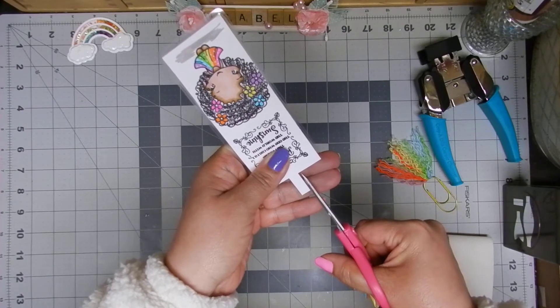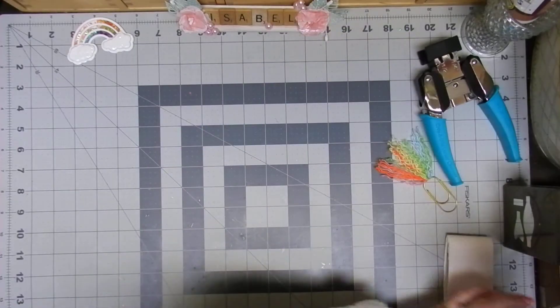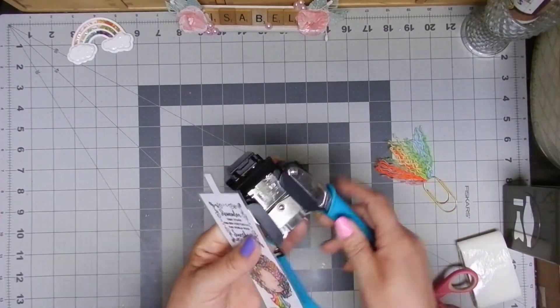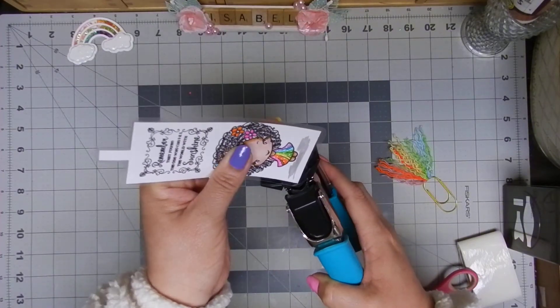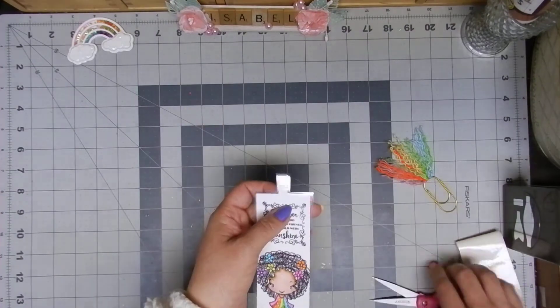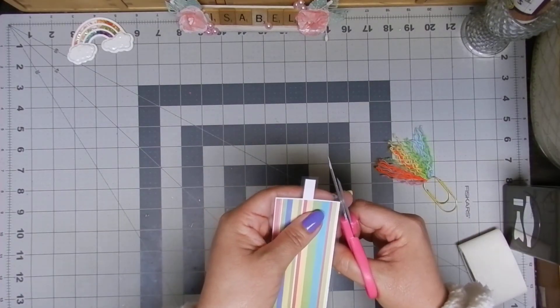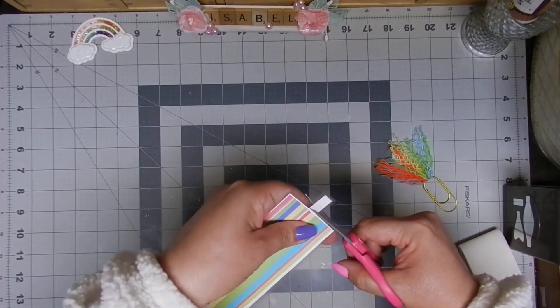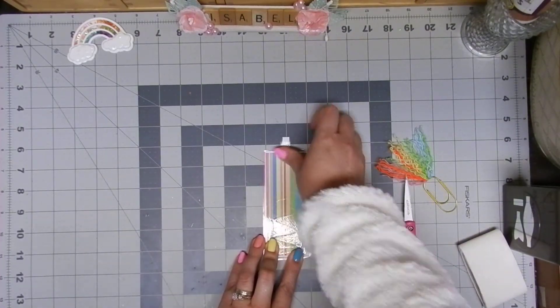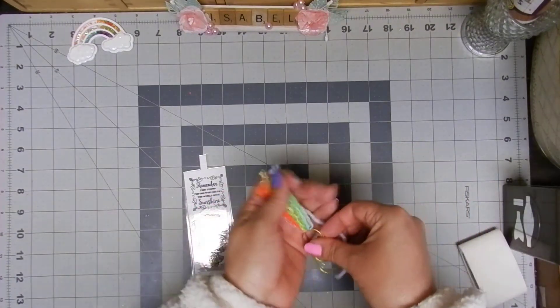Then I use my corner chomper and I'm gonna use the one-quarter size and I'm gonna chomp both corners over here. But we also need to do that in the top part, otherwise we can hurt our hands or fingers. I use my scissors for that because my corner chomper can't make it over here. You can see the glue over here but that's fine, when it dries it's gonna be fine.